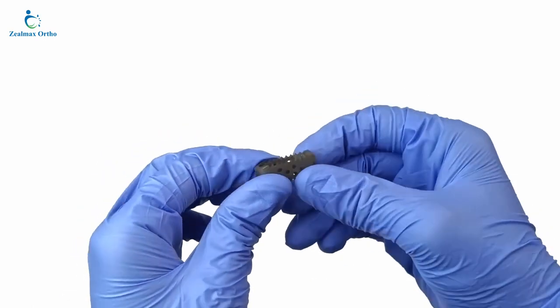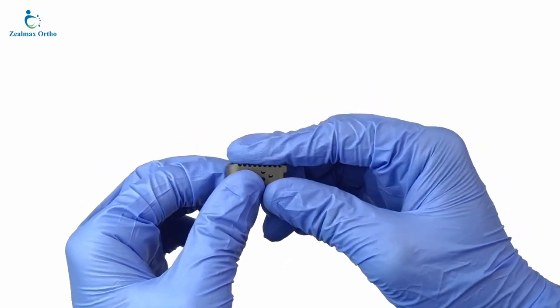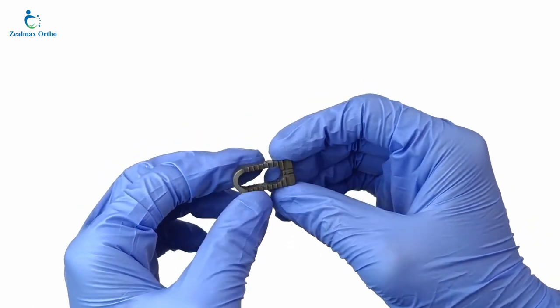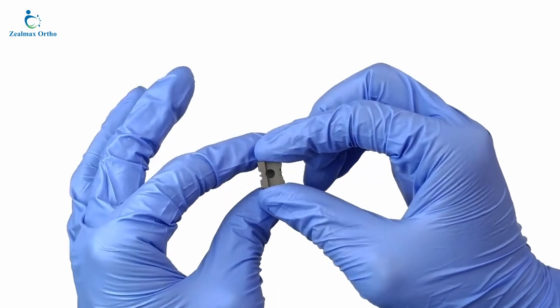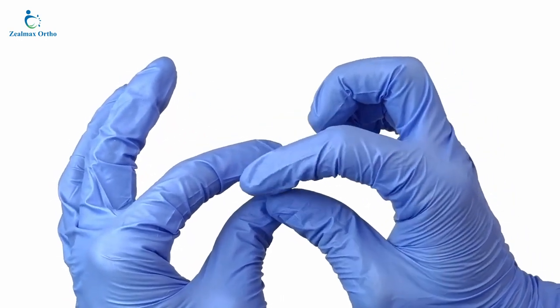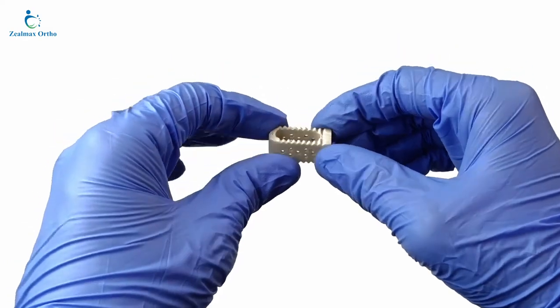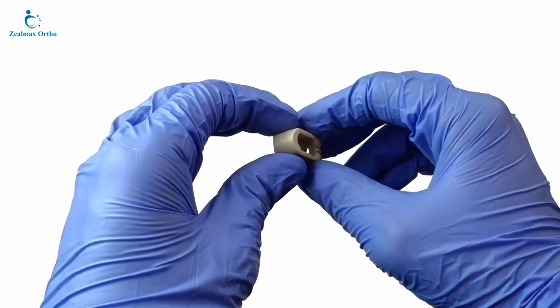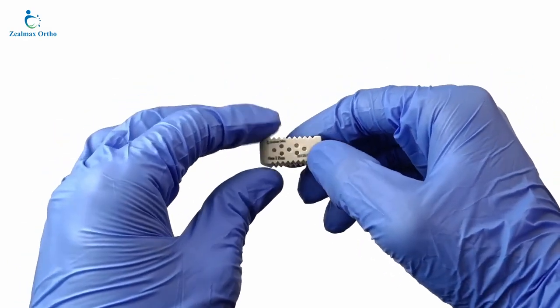PLIF bullet type cages are popular choices for addressing lumbar spine issues. PLIF bullet type cage is constructed from titanium grade 5 and PEEK materials for durability and biocompatibility. It is available in various sizes for surgeon flexibility and patient customization.